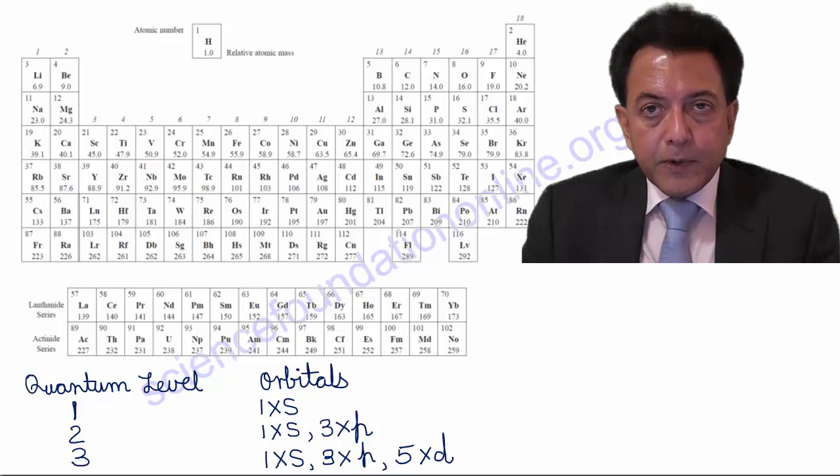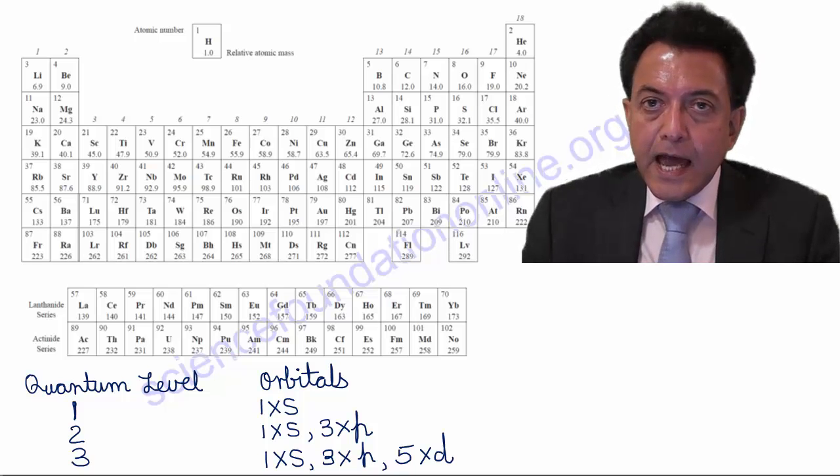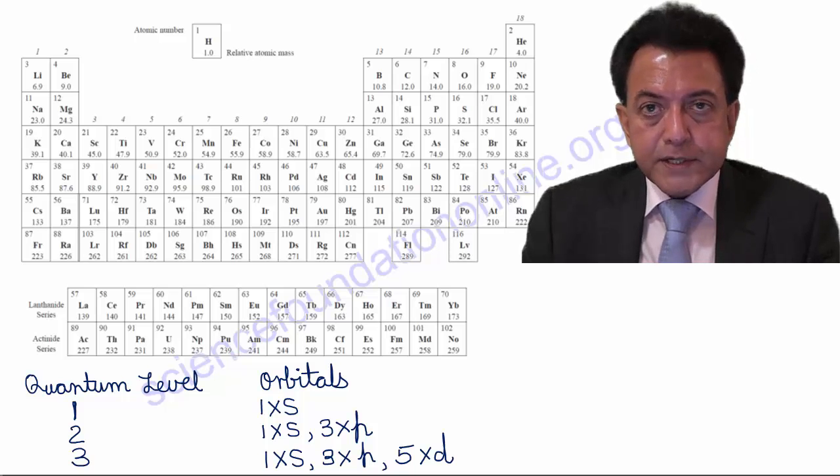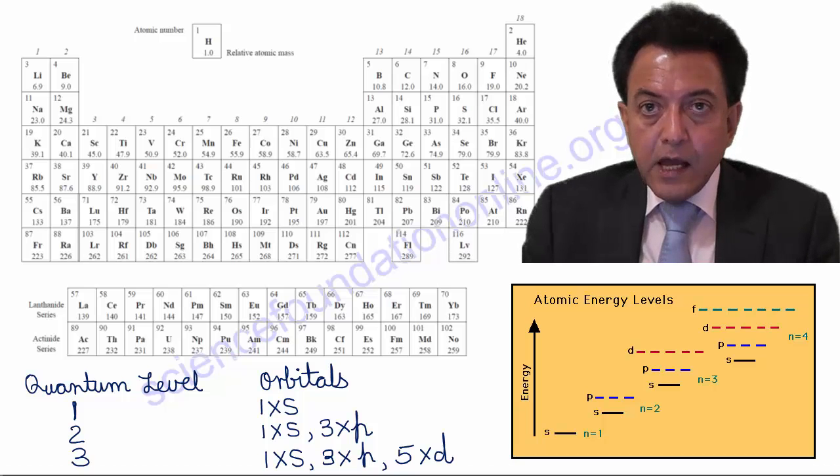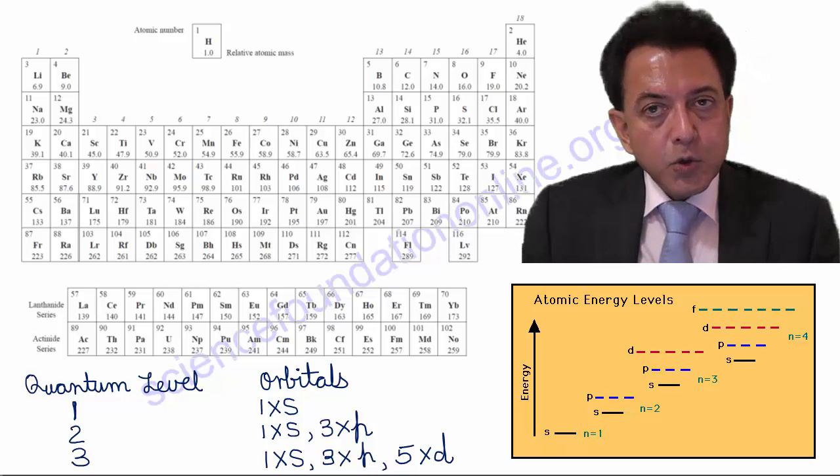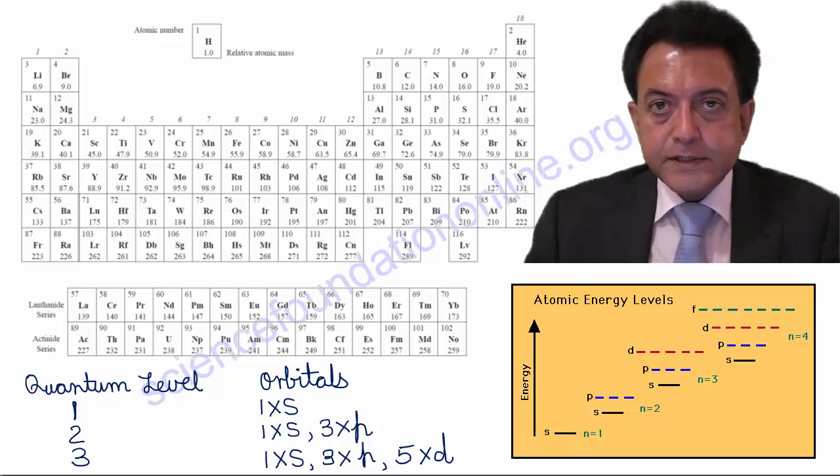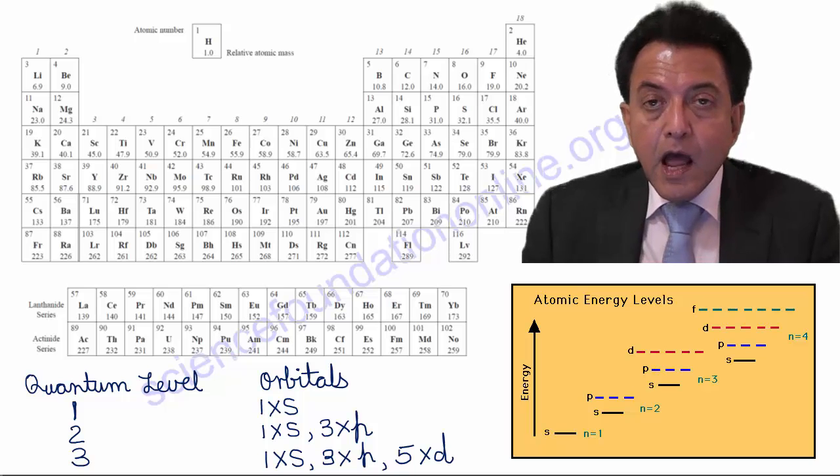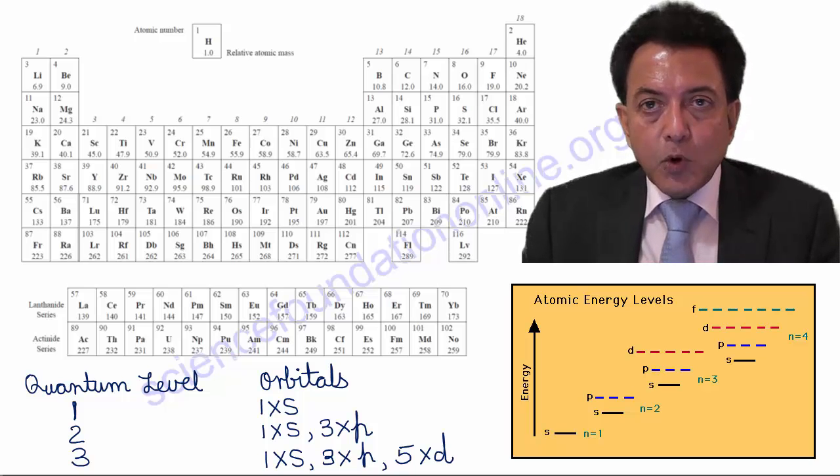So, this Aufbau Principle says that as atoms have more and more electrons, they fill the orbitals by beginning with the lowest energy orbital first, and then progressively moving into orbitals with higher and higher energies. Now, though it hasn't been drawn to scale, I have now added a diagram that shows the comparative energies of these different orbitals, to explain how electrons fill these orbitals according to the Aufbau Principle.